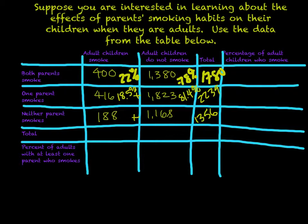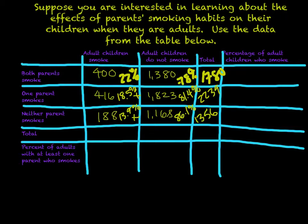For the neither-parents-smoke group, we have 188 compared to 1,356, which is 13.9% smokers. The remaining 86.1% are non-smokers.